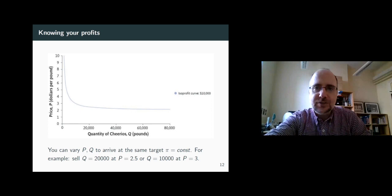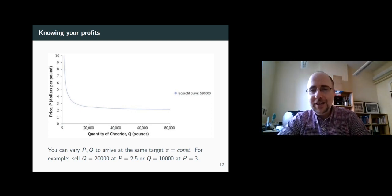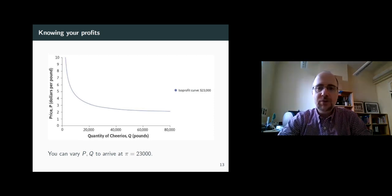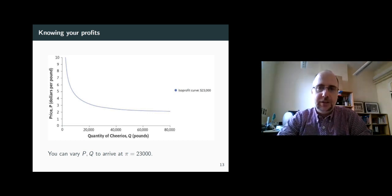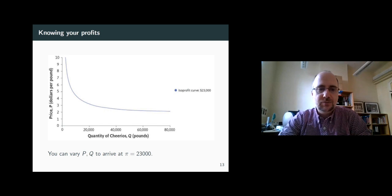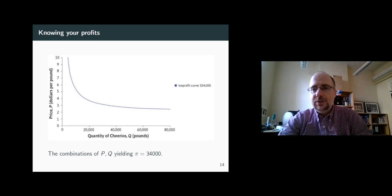Now if you multiply this average profit with how much you sell, you arrive at your total profit. The point here is, and this is very, very important, that you can choose all kinds of combinations of prices and quantities to arrive at a profit of 10,000. We call those combinations of prices and quantities which deliver identical profits with the fancy name isoprofit curves. You can keep varying prices and quantities to arrive at a different profit level. This isoprofit curve, for example, shows you all the possible combinations of P and Q delivering a profit of 23,000. So if you target a profit of 23,000, you know what those combinations of prices and quantities are. And you know the prices and quantities for a profit of 34,000 and so on.